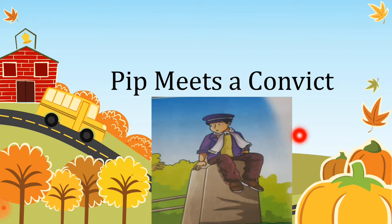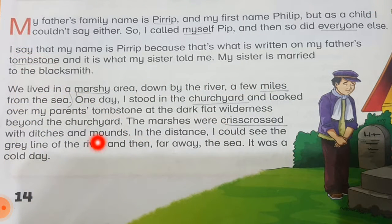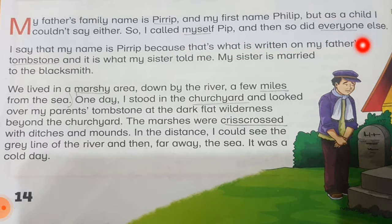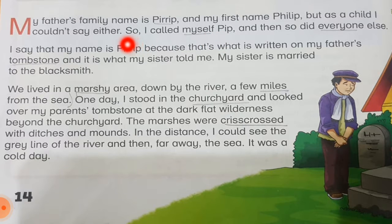I'll start reading now. My father's family name is Pirrip and my first name is Philip, but as a child I couldn't say either, so I called myself Pip, and then so did everyone else. Both names were difficult to pronounce for Pip as a child, so he called himself Pip, and that is what his name became permanently, even when he grew up.